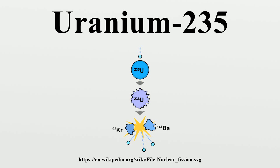When U-235 nuclides are bombarded with neutrons, fission reactions can occur. Heavy water reactors and some graphite-moderated reactors can use unenriched uranium, but light water reactors must use low-enriched uranium because of light water's neutron absorption. Uranium enrichment removes some of the uranium-238 and increases the proportion of uranium-235.